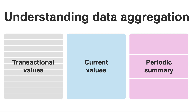Let's get into understanding how your data is aggregated. There are really three main ways that data will come out of a system, or that you'd organize your own data in Google Sheets or Excel. It can be transactional values, where every single line item is its own transaction continuing throughout time. There's current values, which is a snapshot of your data right now that continues to aggregate over time. And then there's the periodic summary, most often associated with Google Analytics, where data starts at zero, increases over a period, then resets to zero.